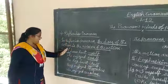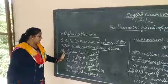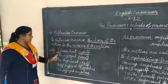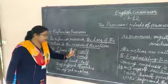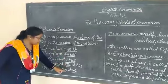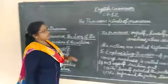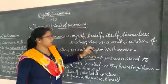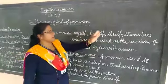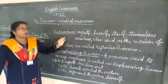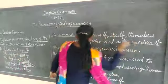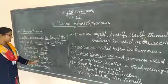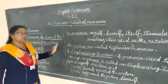So you see, children: I, she, the dog, they, we — all are performing the action and also receiving the action. So here, myself, herself, itself, themselves, ourselves — when used as the receiver of the action, these words are called reflexive pronouns.